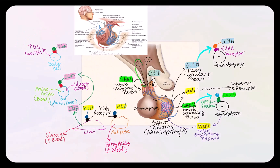A neuroendocrine cell in the hypothalamus secretes growth hormone-releasing hormone, also known as somatocritin. As a hormone, it enters blood at the primary plexus of the hypophysial portal system, travels down the hypophysial portal veins to the secondary plexus, then leaves blood and enters the interstitial fluid to arrive at its target cell — the somatotrope. The hormone binds to the receptor on the somatotrope, stimulating it to secrete its own hormone, human growth hormone, also known as somatotropin.